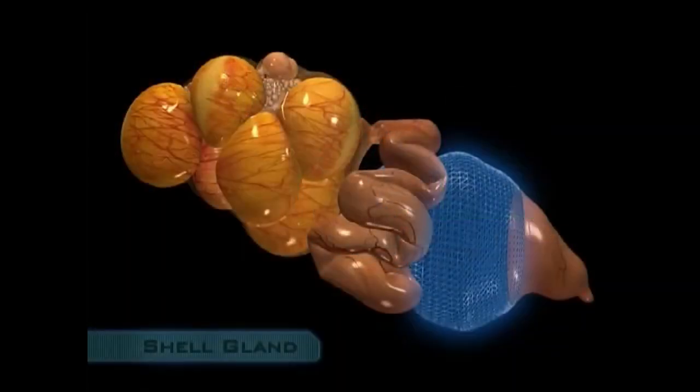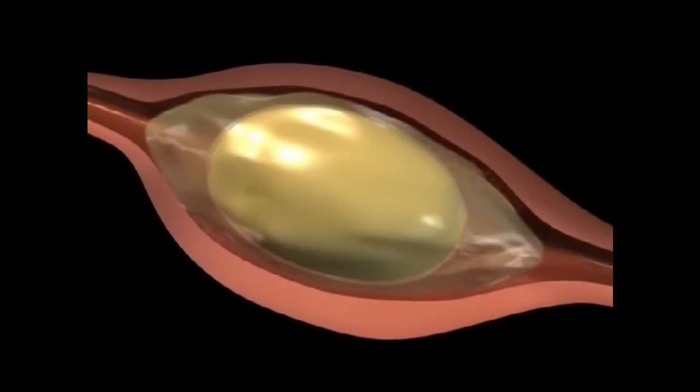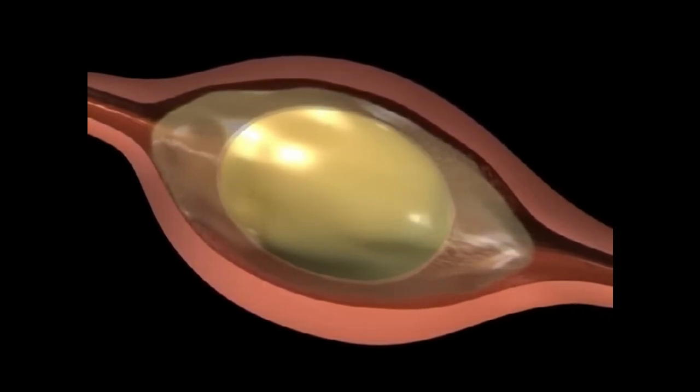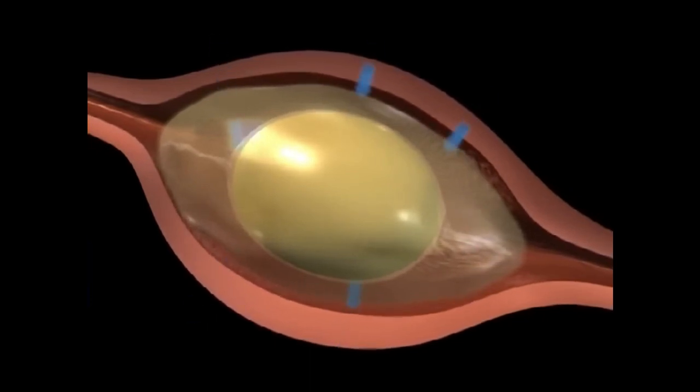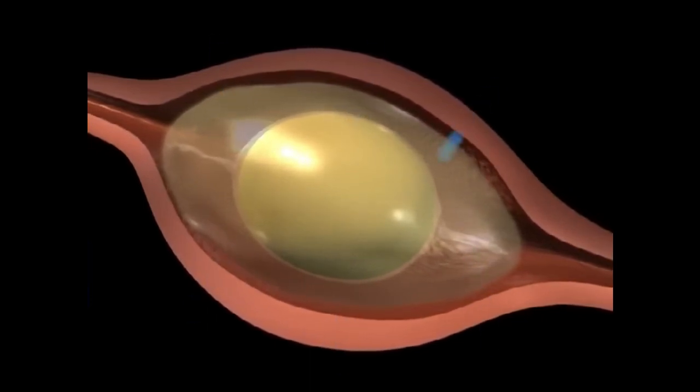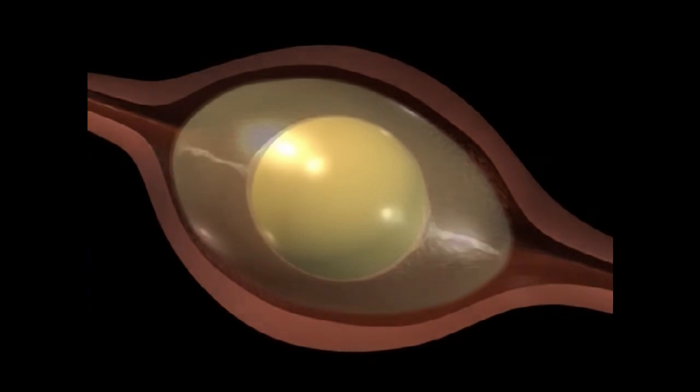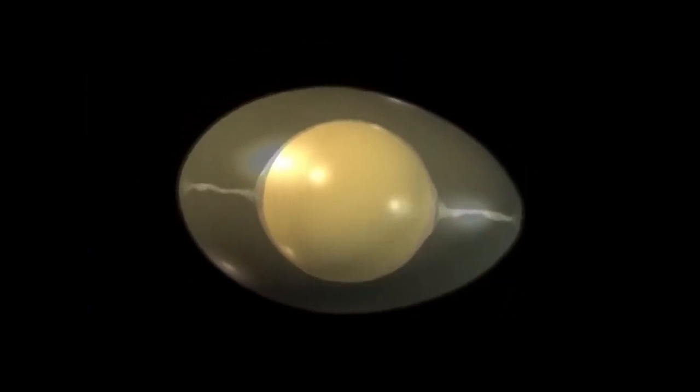The partially formed egg then enters the shell gland. Here, over the next 20 hours, the shell will form. First, a thin albumin is secreted. This thin albumin is mostly water, and it moves by osmosis through the two shell membranes into the highly concentrated thick albumin surrounding the yolk. This plumps the egg into a normal shape, and stretches the shell membranes tight around it.